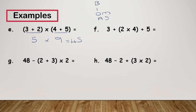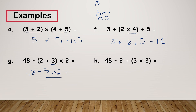On this next one I need to do what's in the brackets first. 2 times 4 gives me 8, so I've got 3 plus 8 plus 5. 3 plus 8 is 11, plus 5 gives me 16. With this next one, again I've got brackets so I do that first. 2 plus 3 gives me 5, so I've got 48 take away 5 times 2. Going back to BIDMAS, multiplication comes before subtraction, so I do 5 times 2, which gives me 10. Then 48 take away 10 gives me 38.